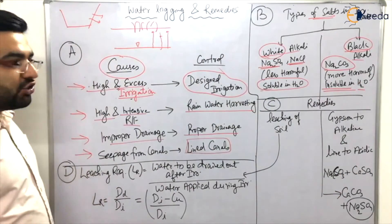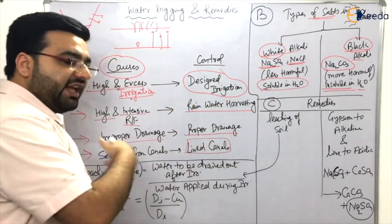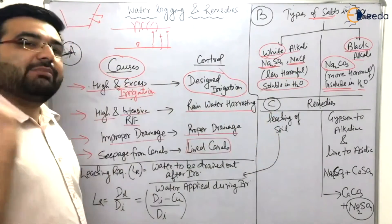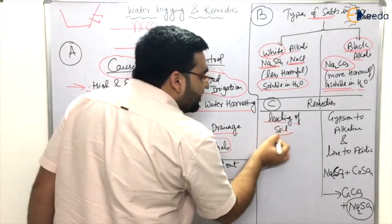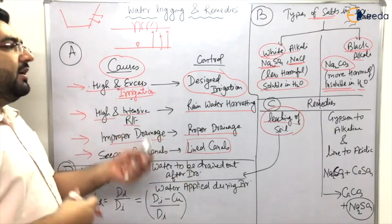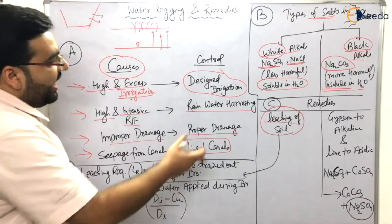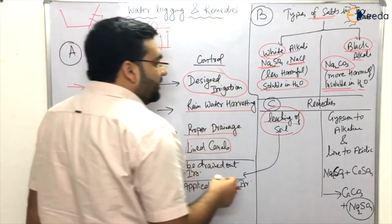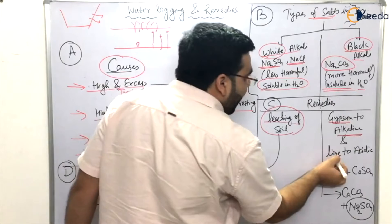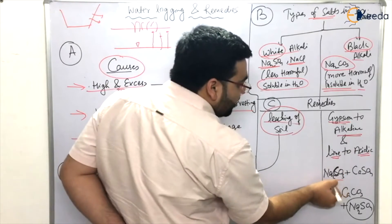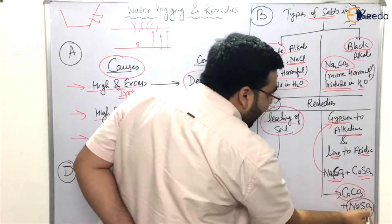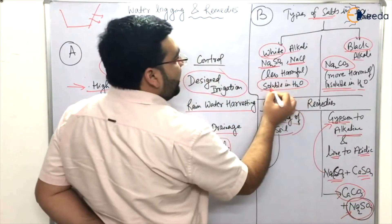Since white alkali is water soluble, if there is excess white alkali on the land, it can be removed by mechanical mixing of water with the land — this process is known as leaching, where we flood the land with a lot of water. The harmful black alkali can be removed by addition of gypsum for alkaline soil, or by addition of lime for acidic soil. The reaction is: Na₂CO₃ + gypsum (CaSO₄) → CaCO₃ + Na₂SO₄, and Na₂SO₄ is water soluble.